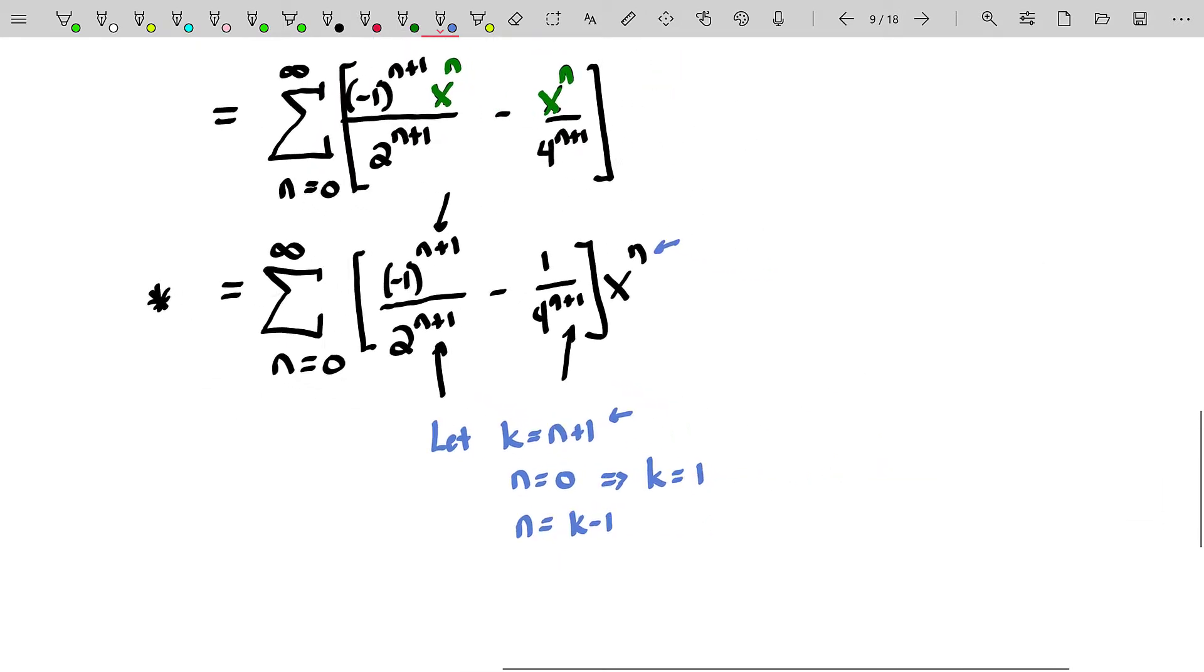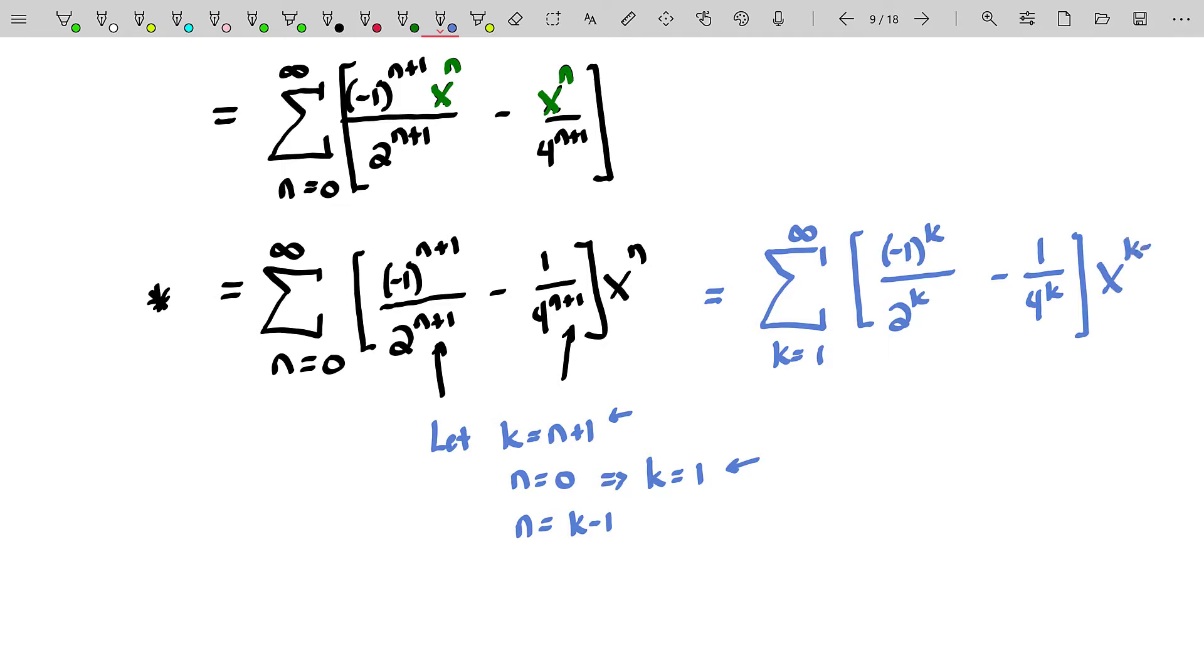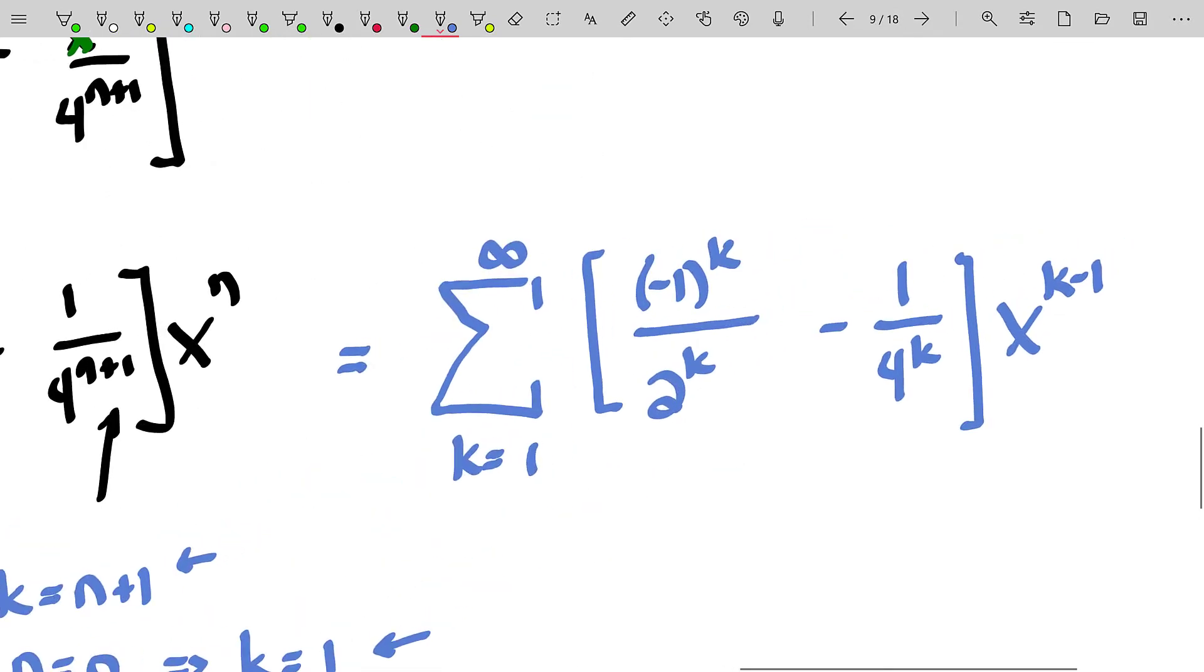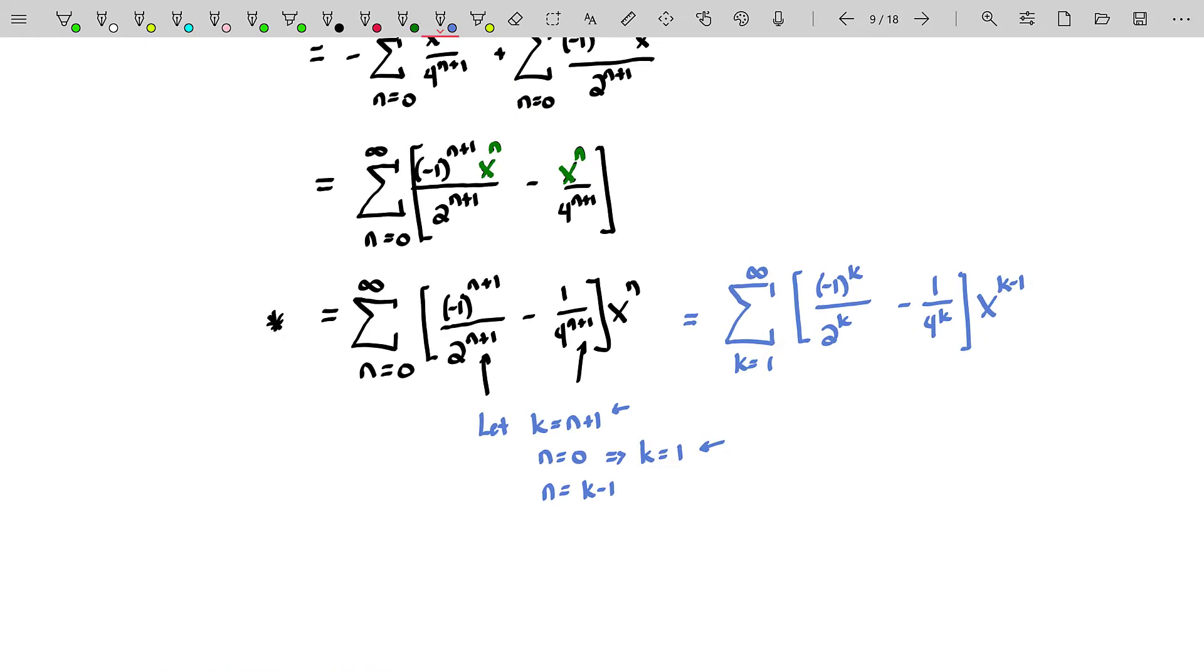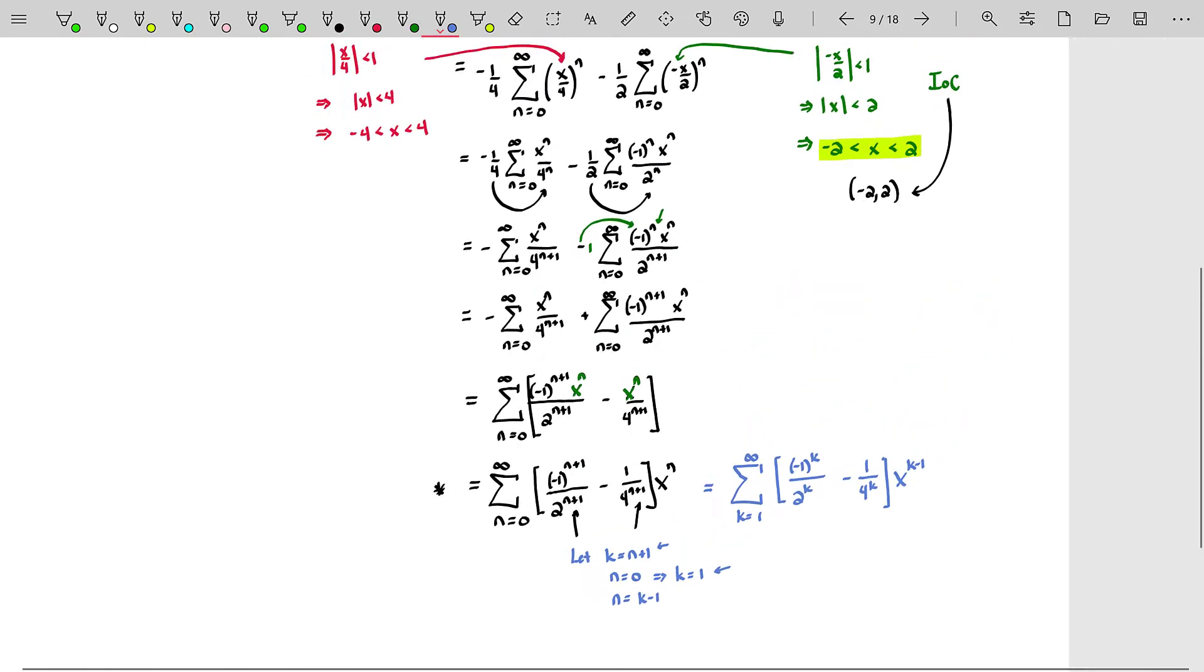Because they might have re-indexed this and said, oh, that's a summation, K equals, let's see, we're going to start at K equals one, go to infinity. Of negative one to the Kth over two to the Kth power minus one over four to the Kth power times X to the N, which is K minus one. So that's another way to write that. They're the same statements. You can expand it out a little bit and you can easily see those are actually the same statements.